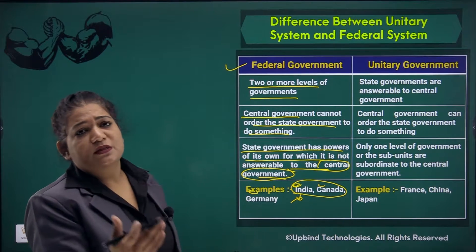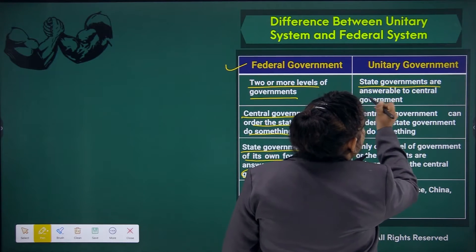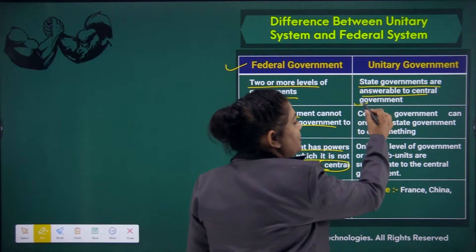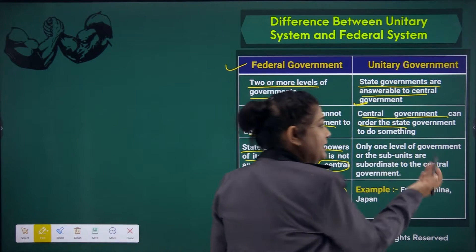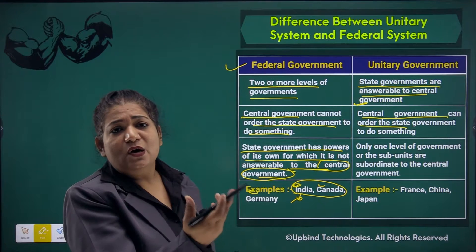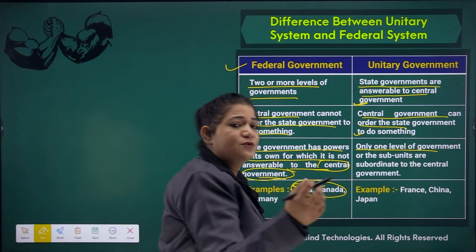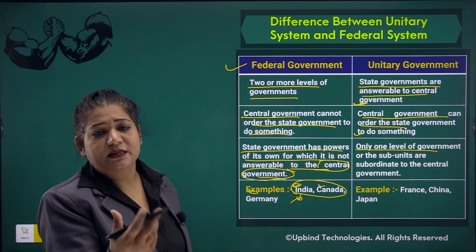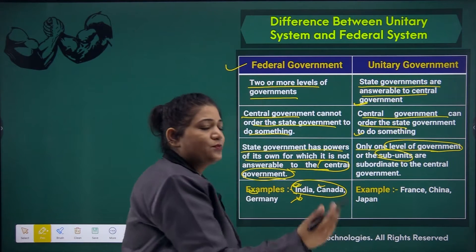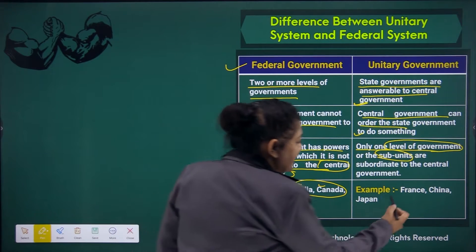In unitary features, state government is always answerable — central government should always be aware of what the state government does, and central government can give orders to state government. Unitary itself says 'uni' — that means one level of government — and within that, sub-units are distributed by the central government so that administration can be run. Examples are France, China, and Japan.